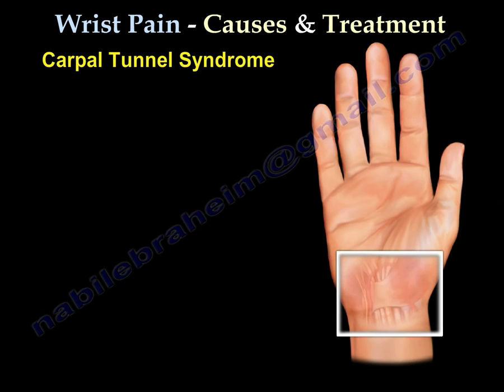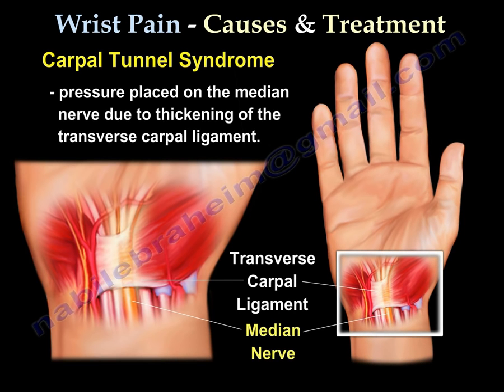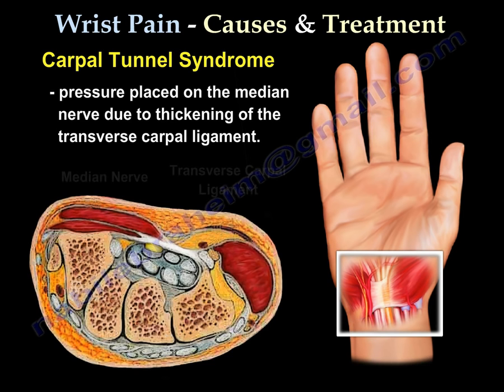Carpal tunnel syndrome involves pressure on the median nerve due to thickening of the transverse carpal ligament. As shown in the picture, the transverse carpal ligament overlies the median nerve, which passes below it.